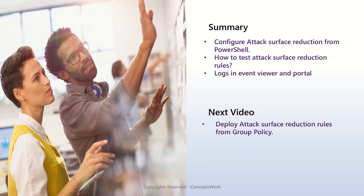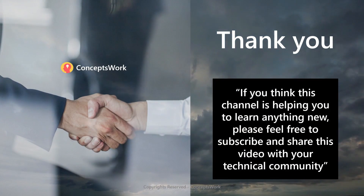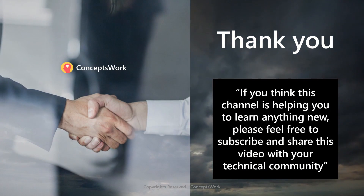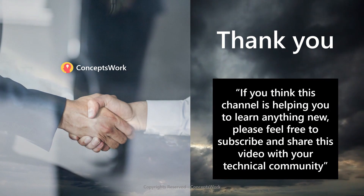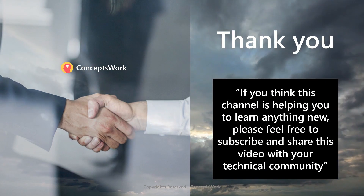To summarize: in this video we discussed configuring attack surface reduction rules from PowerShell, how to test them, and how to view logs. In the next video I'll show how to deploy attack surface reduction rules from Group Policy Object. If this channel is helping you learn something new, please subscribe and join the support membership. Thank you so much for your time.